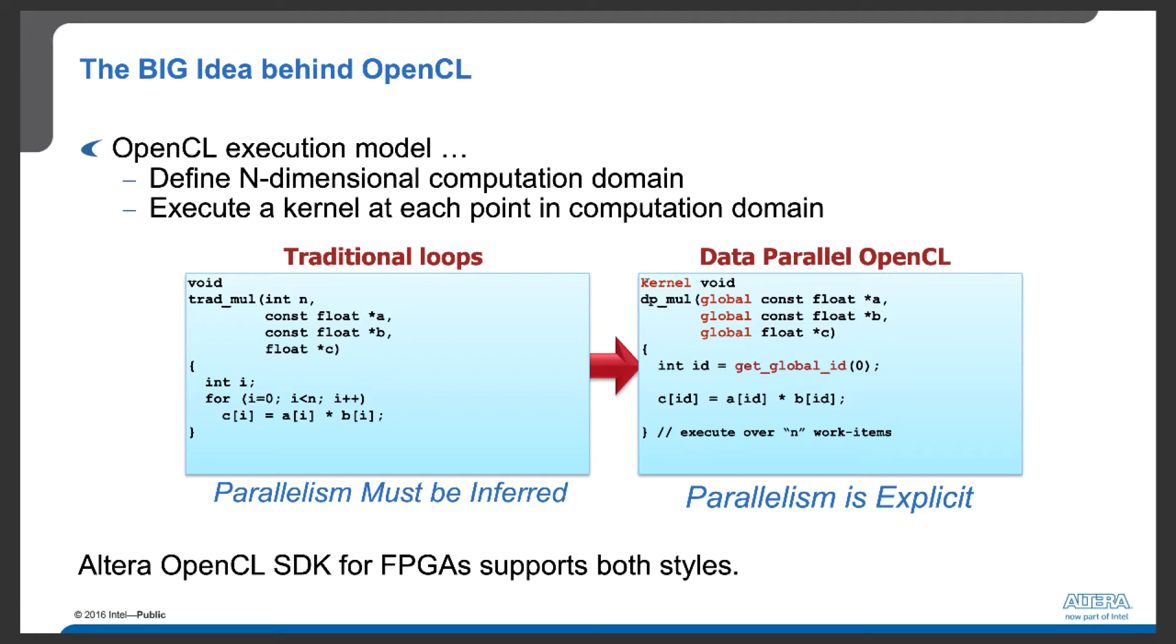Let's look at this example. If we want to multiply two vectors, we can use this for loop to perform element-wise multiplication.